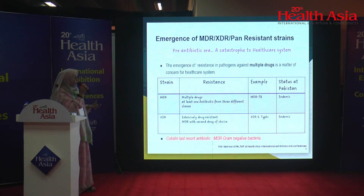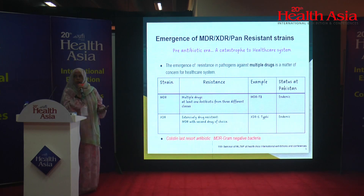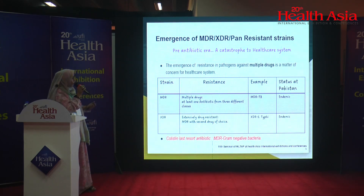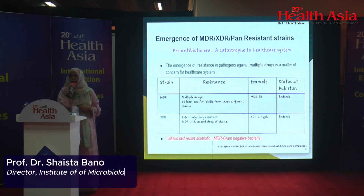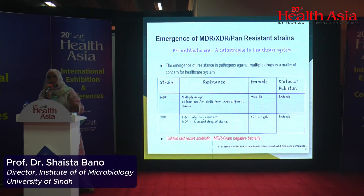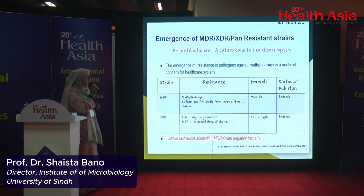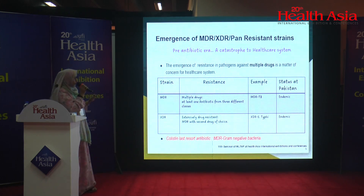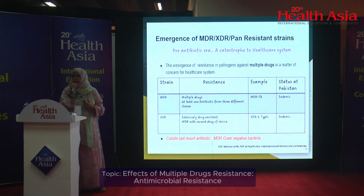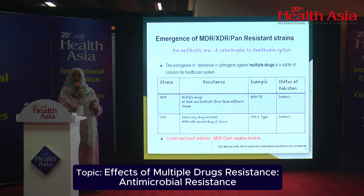Multiple drug resistance leads to the survival of microbes in the presence of antibiotics which are usually effective against them. When MDR isolates continue to develop resistance and that resistance is extended to second-line therapy, we call it extensively drug resistant microbes. When this happens — infections caused by MDR or XDR such as MDR-TB and XDR Typhi — a catastrophe appears in the healthcare system because the available therapeutic options become ineffective.